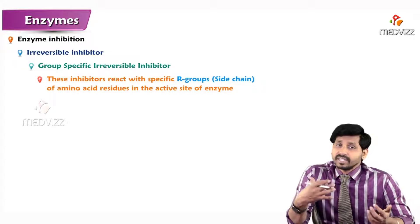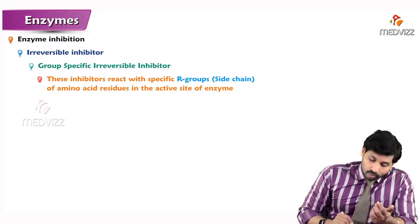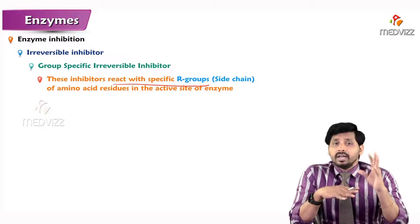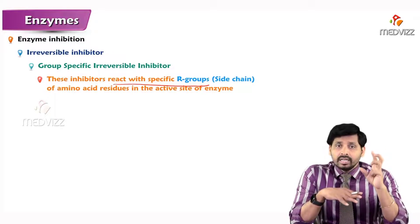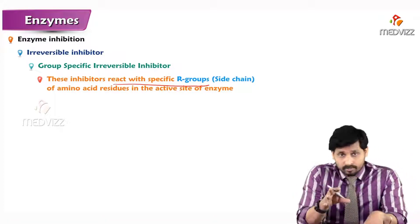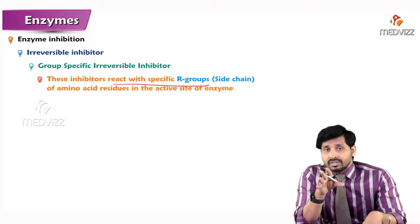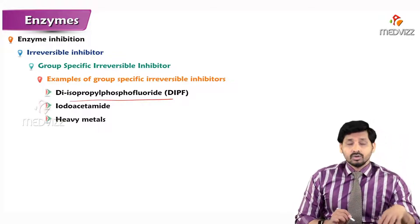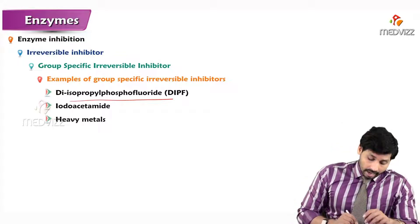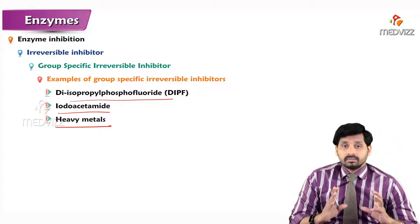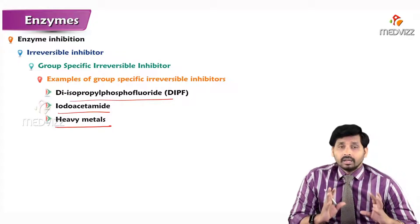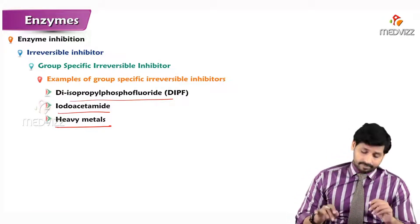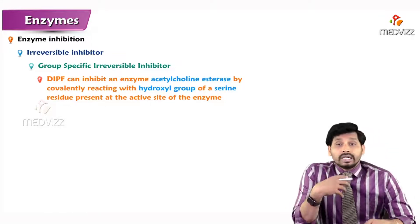The second category is group specific irreversible inhibitors. These inhibitors react with specific R groups — that is, specific amino acid residue side chains present on the active site of the enzyme. Examples include diisopropyl phosphofluoride (DIPF), iodoacetamide, and heavy metals, all of which react specifically with groups at the active site.